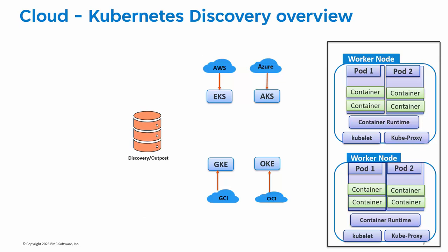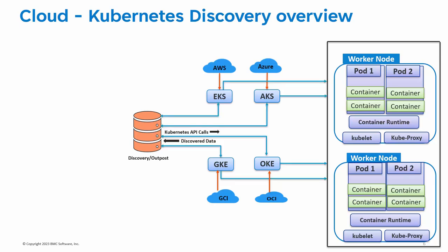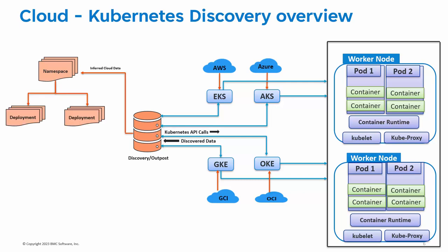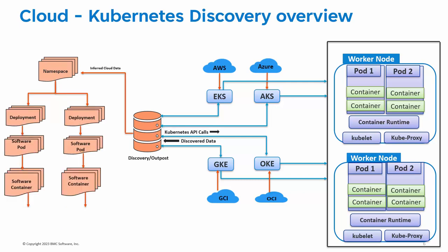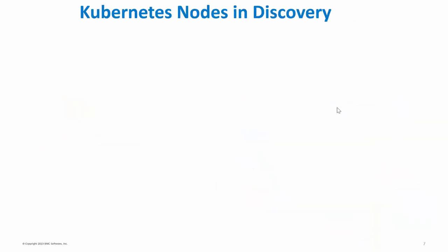For scanning all supported Kubernetes entities such as namespace, deployment, pods, and containers, it is required to perform the Kubernetes API scanning using created Kubernetes credentials. When you perform the Kubernetes scanning, Discovery or Outpost will run Kubernetes API requests on cloud Kubernetes services using the cluster URL, and then Discovery will create Kubernetes nodes like namespace, deployments, software pods, software containers, and host nodes in Discovery.